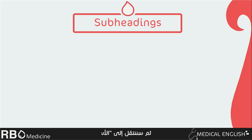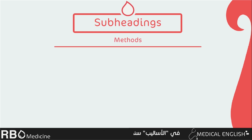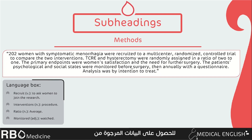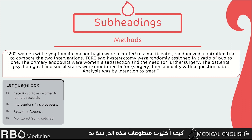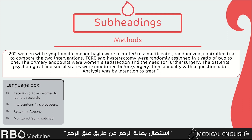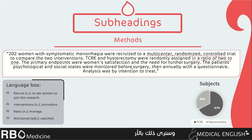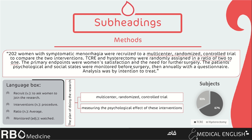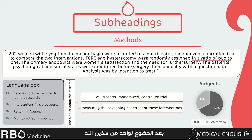Next, we move on to the methods, where we find the way the researchers followed to get the data they wanted. Volunteers were picked in a randomly controlled way without any previous intentions for either TCRE or hysterectomy. The number of patients who chose TCRE is double the number with hysterectomy. In the end, to declare whether hysterectomy or TCRE is better, they measured the psychological and social satisfaction of the subjects after undergoing one of these interventions.